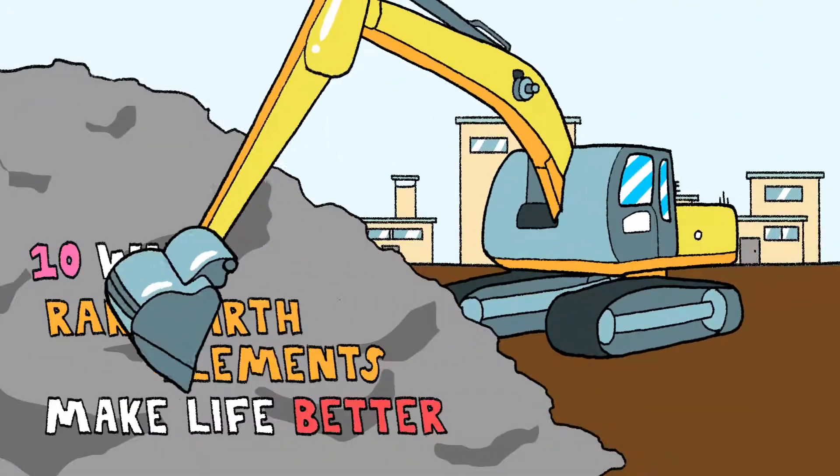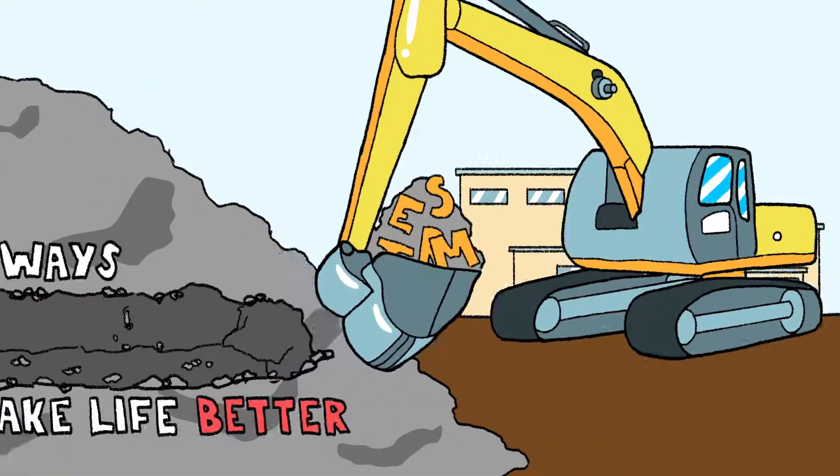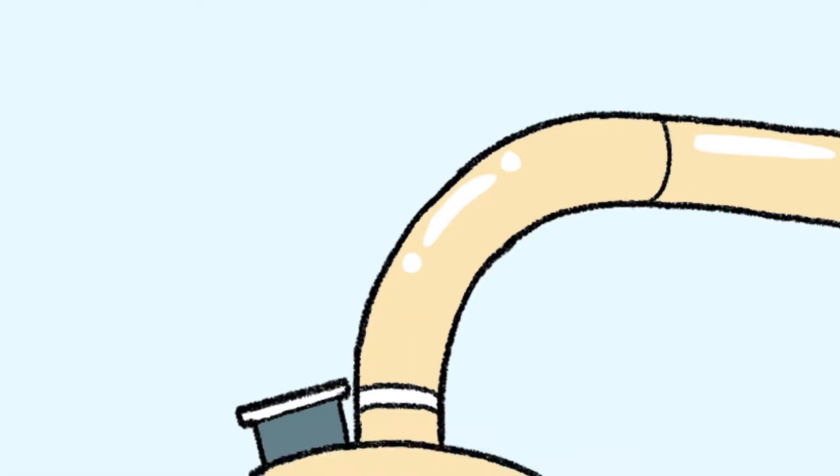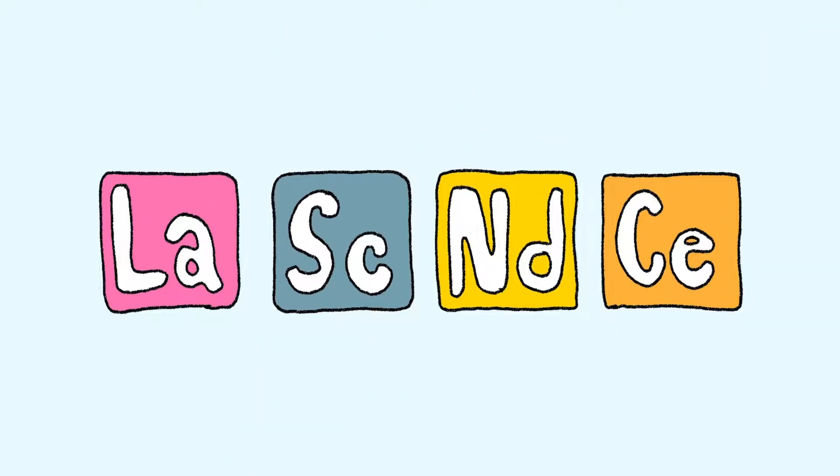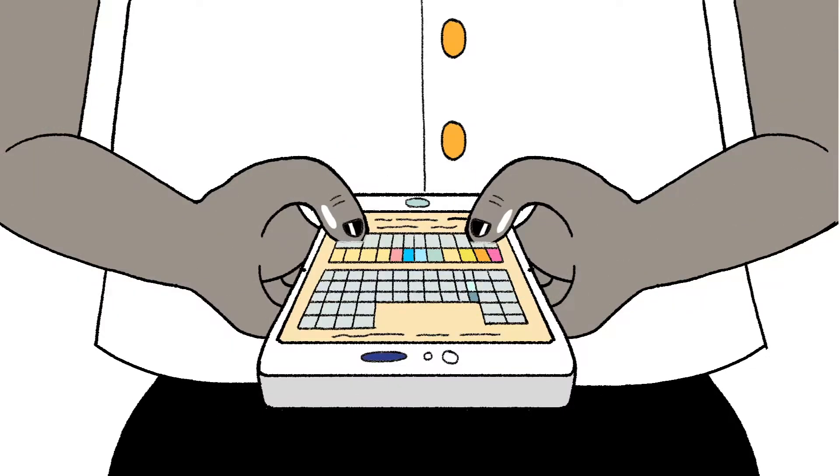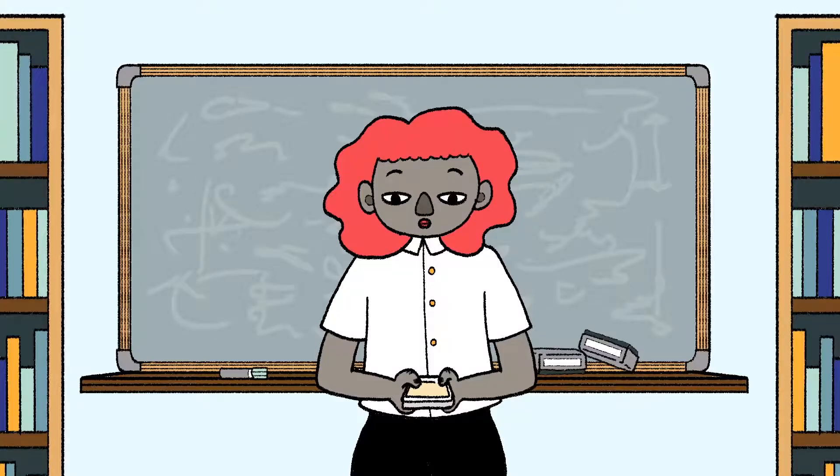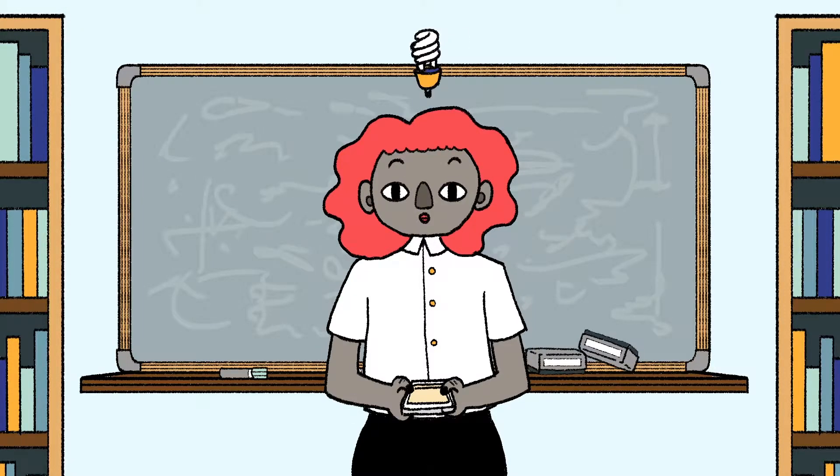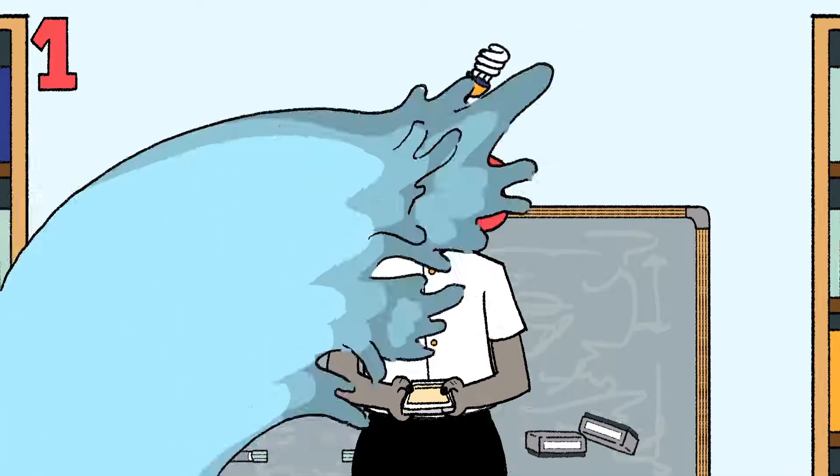10 Ways Rare Earth Elements Make Life Better. How much do you know about rare earth elements, the 17 metals found across the bottom of the periodic table? You may know more than you think you do, and chances are you interact with them almost every day. Here are 10 ways.